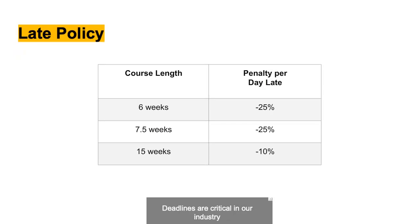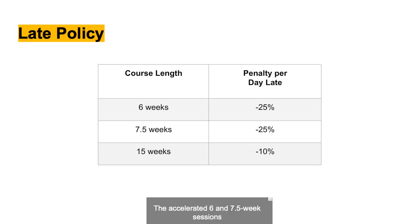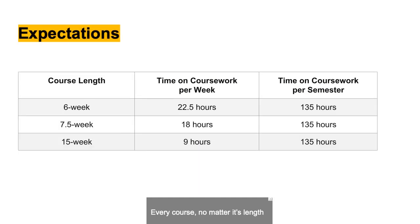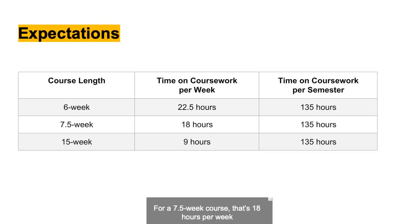Deadlines are critical in our industry, so they will be in this class too. The accelerated six- and seven-and-a-half-week sessions will lose 25% on assignments per day late, and the 15-week session will lose 10%. Every course, no matter its length, requires 135 hours of coursework — that's 22.5 hours per week for six weeks, 18 hours for seven-and-a-half weeks, and nine hours for 15 weeks.